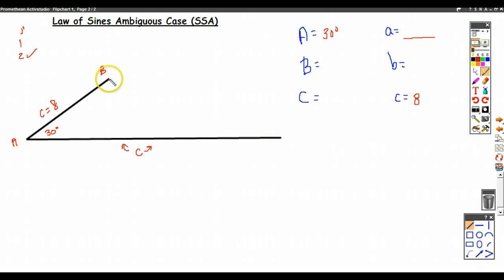We could be given a situation in which A is just long enough to make it down here. And in that case, one triangle would be formed.